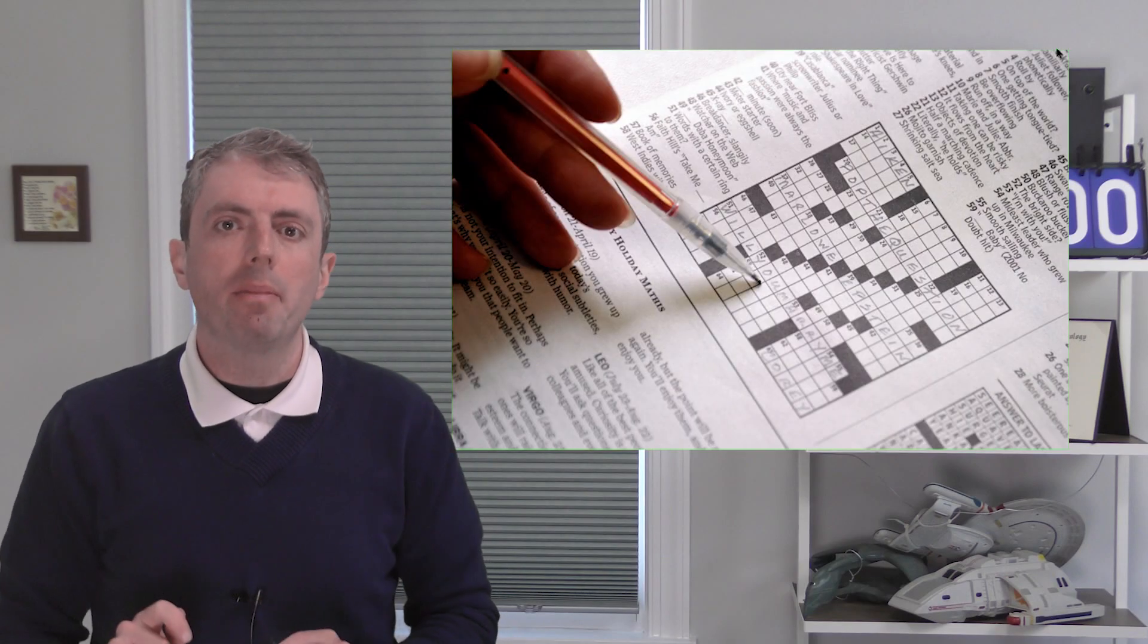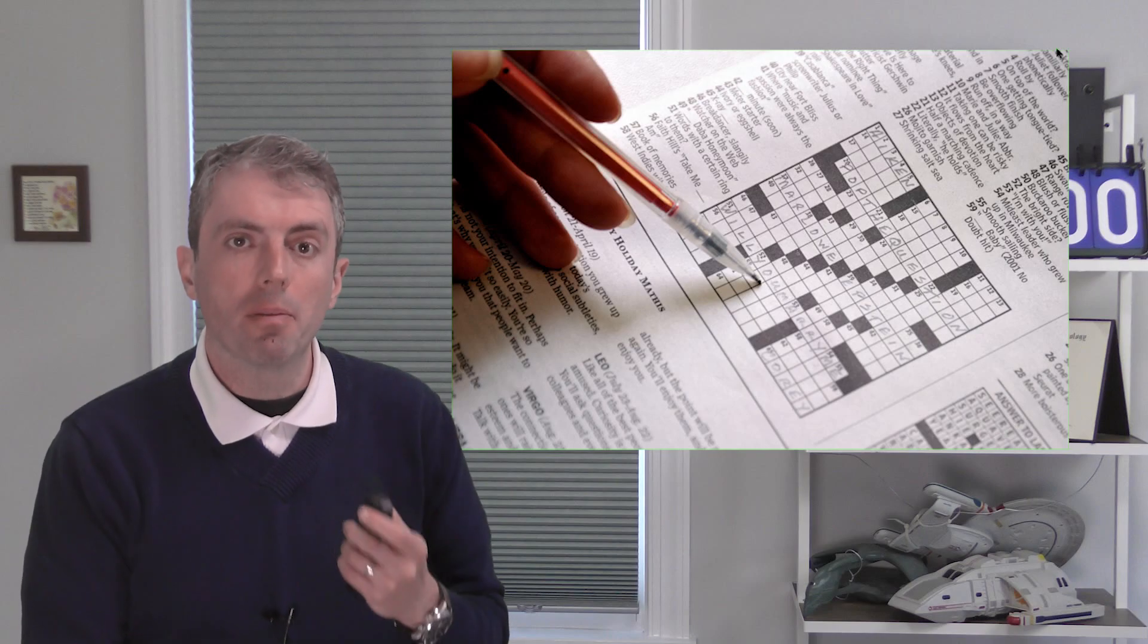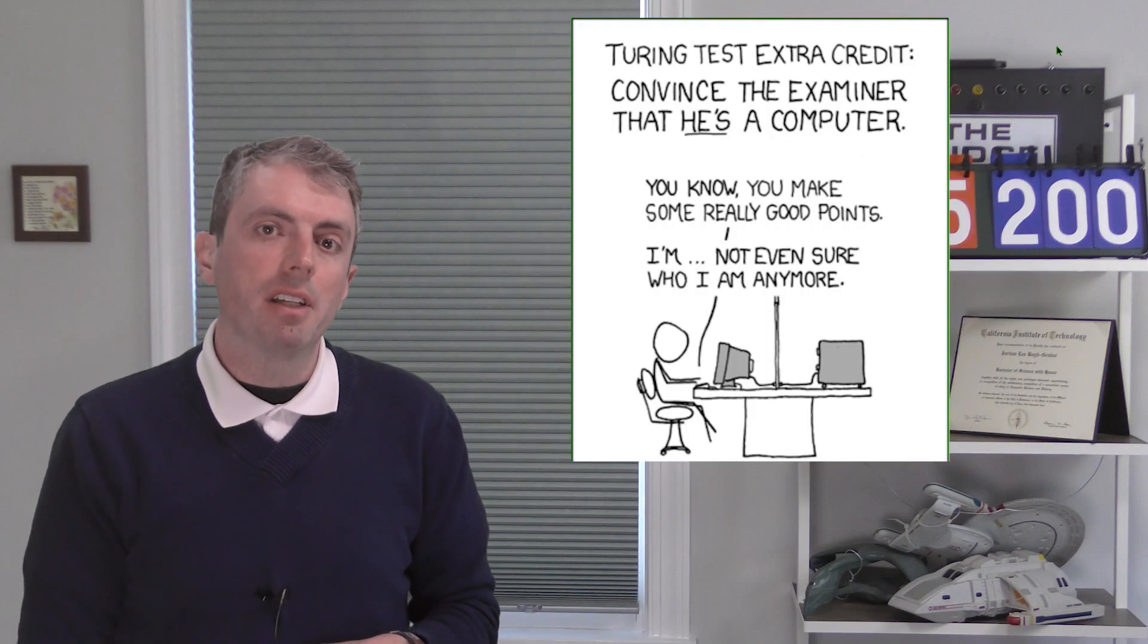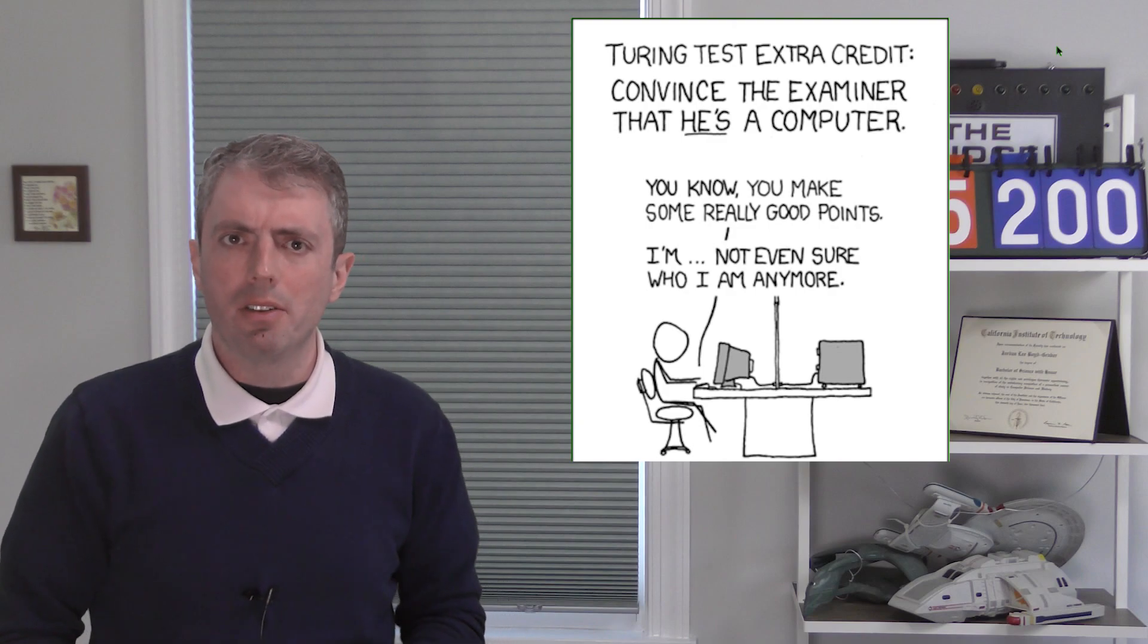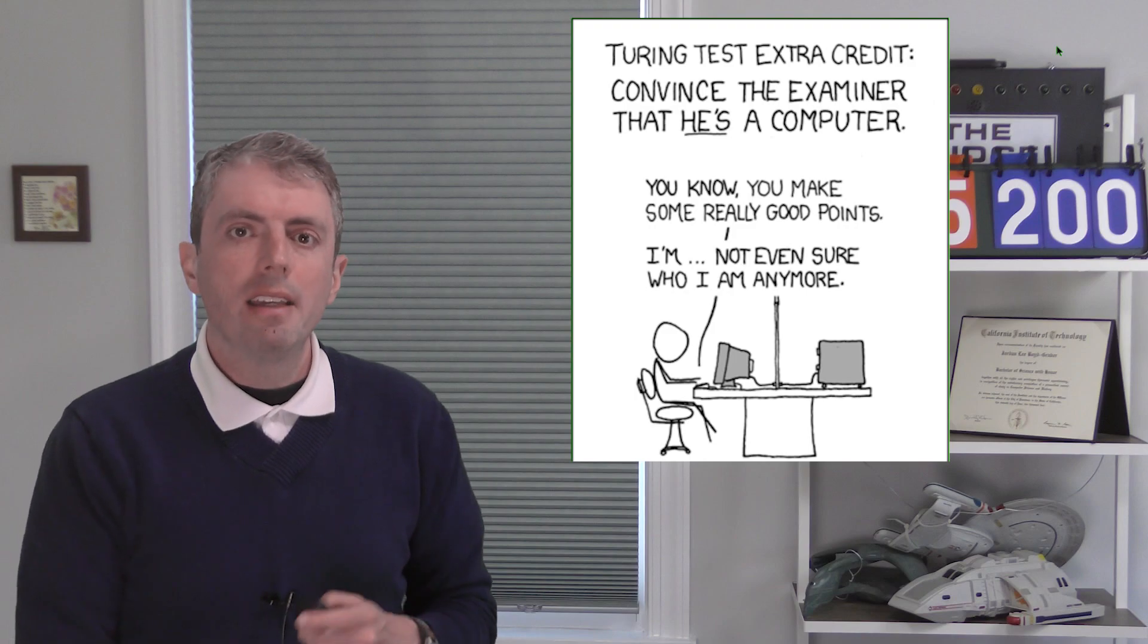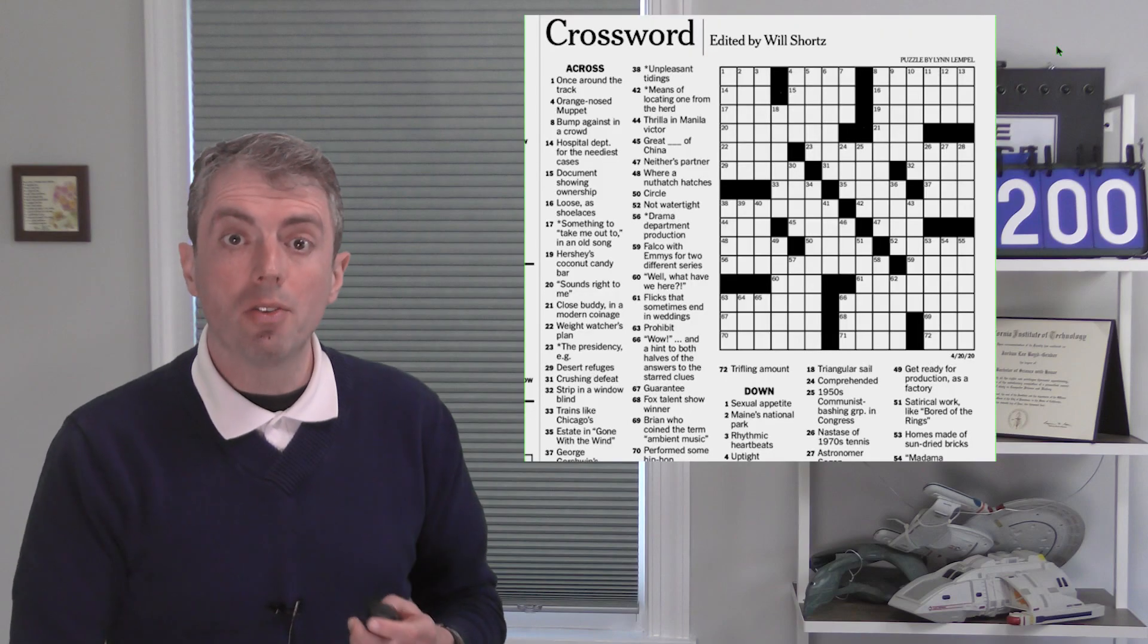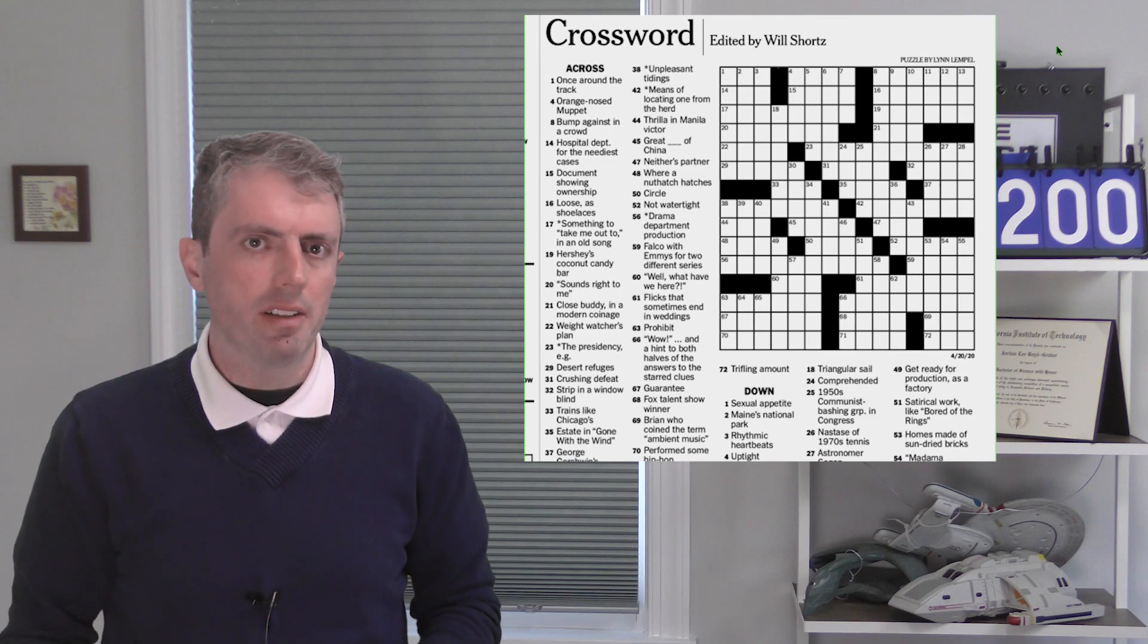Before, we talked about how question answering becomes harder when there is more than one question in a conversation. Indeed, the holy grail of artificial intelligence is for a computer to pass itself off as a human in an extended conversation—the Turing Test. That could be a dozen conversational turns, but a crossword is even more than that. A New York Times crossword can have over a hundred clues that aren't part of a conversation but that all interact with each other.